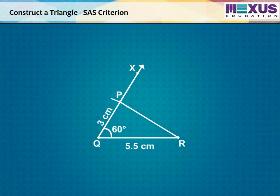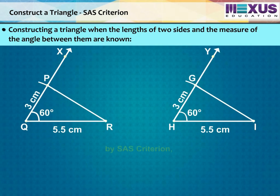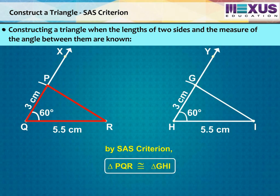Now, if we construct a triangle GHI with the same parameters as triangle PQR, then by SAS criterion, we can say that triangle PQR is congruent to triangle GHI.